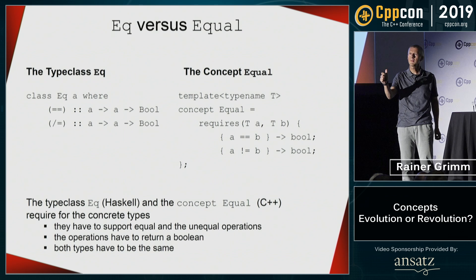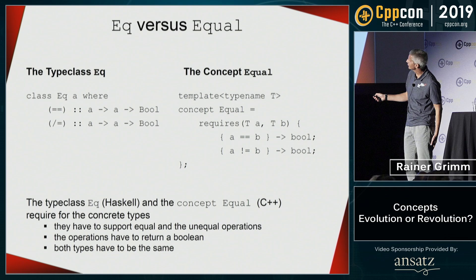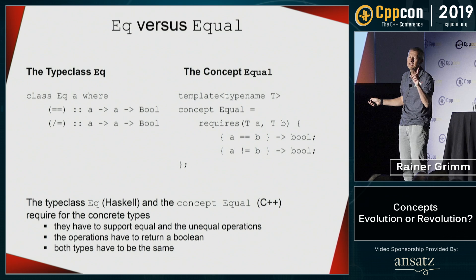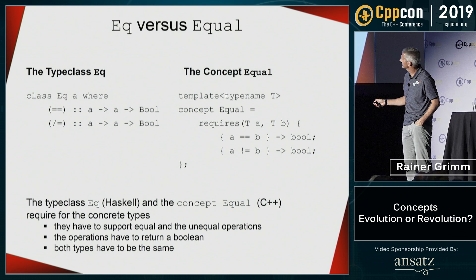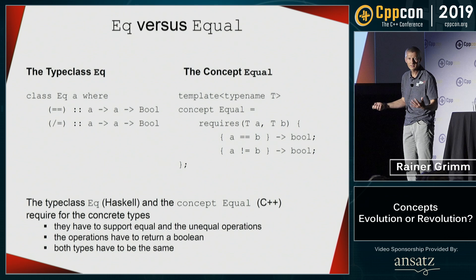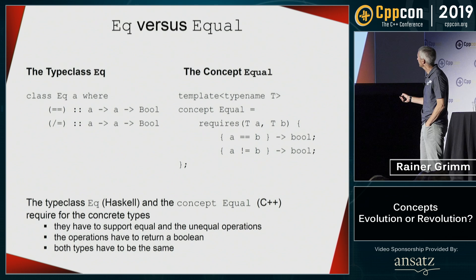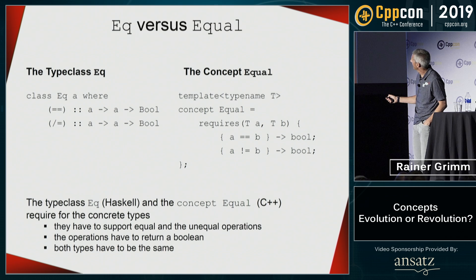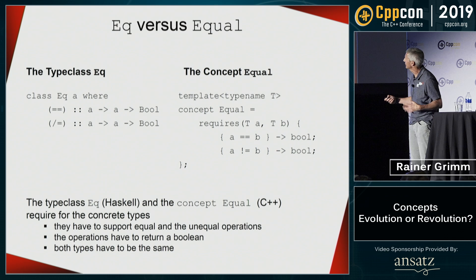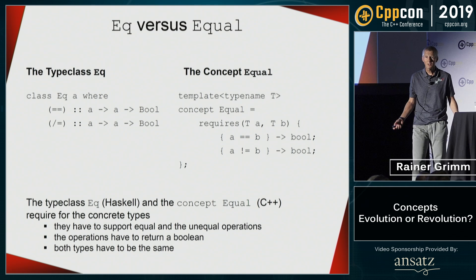Now a little bit of Haskell. This is the definition of the type class Eq in Haskell: Eq a requires == and /=, both types must be the same, and it returns bool. If you compare this to the C++ concept equal I defined, they look quite similar: T, a and b must be of type T, it must support == and !=, and it must return bool. Quite elegant.